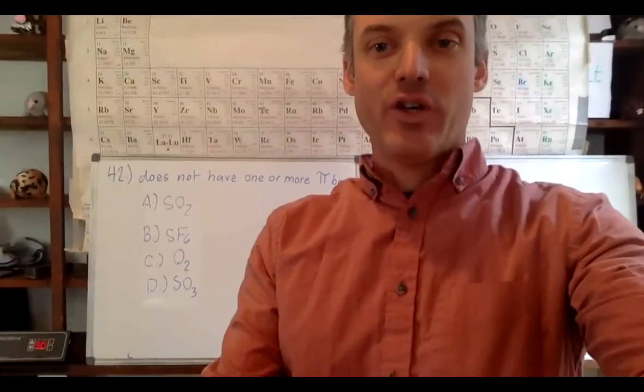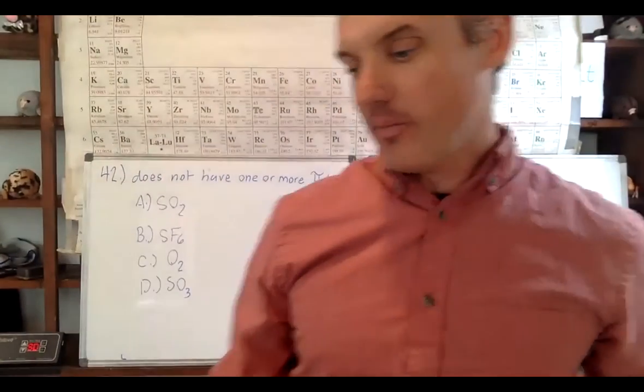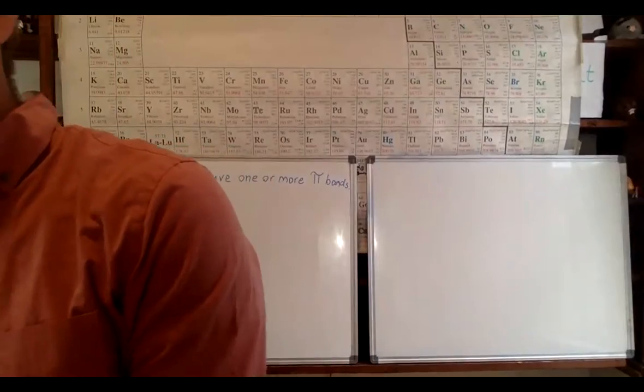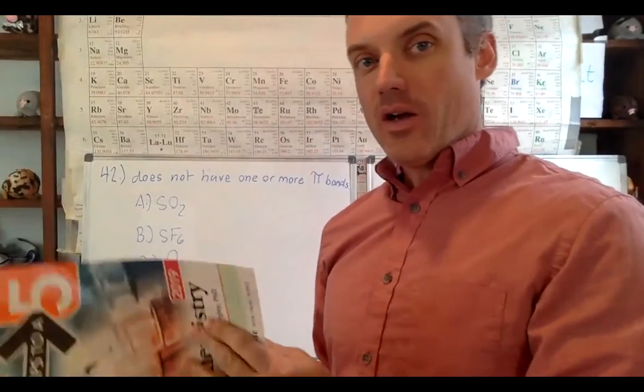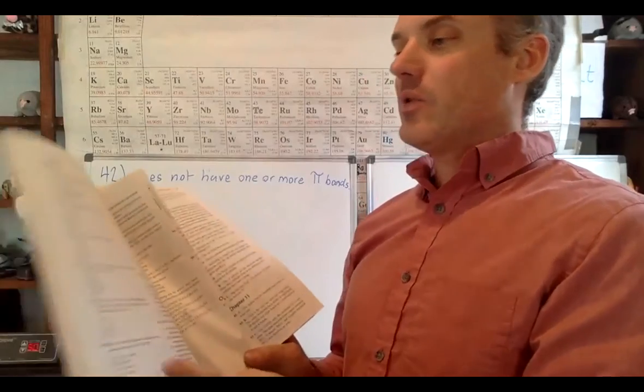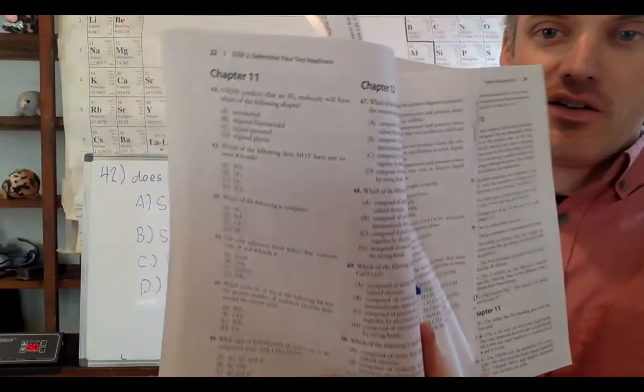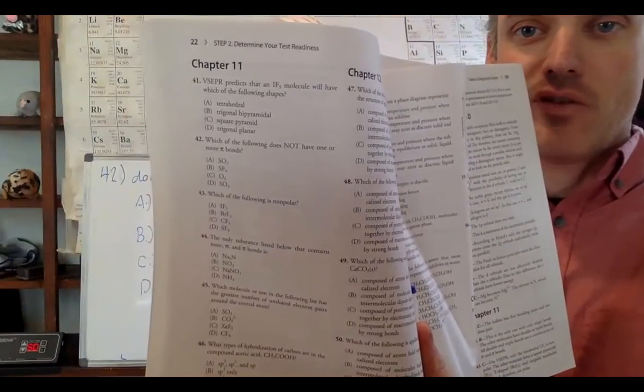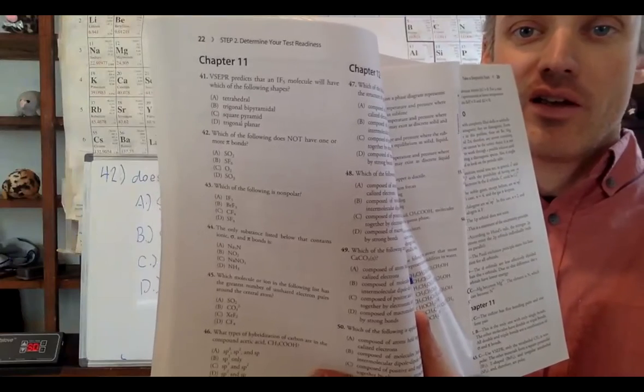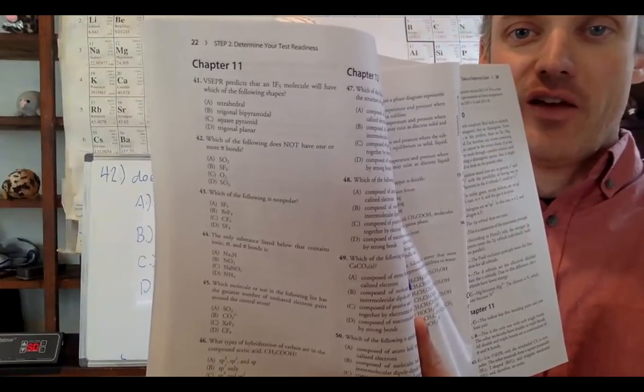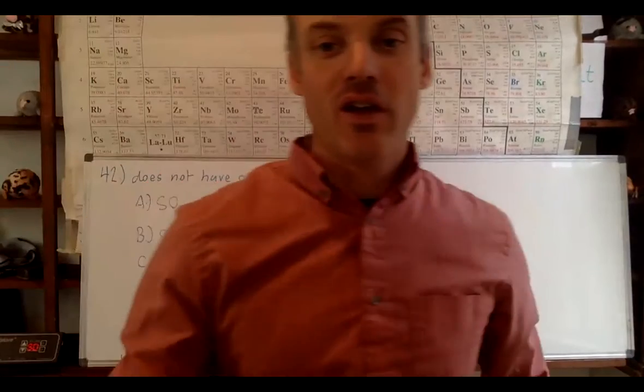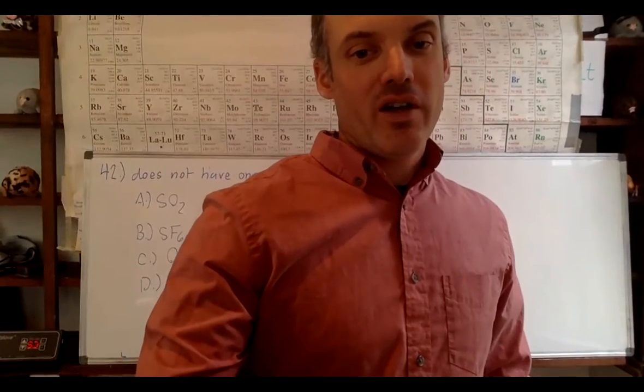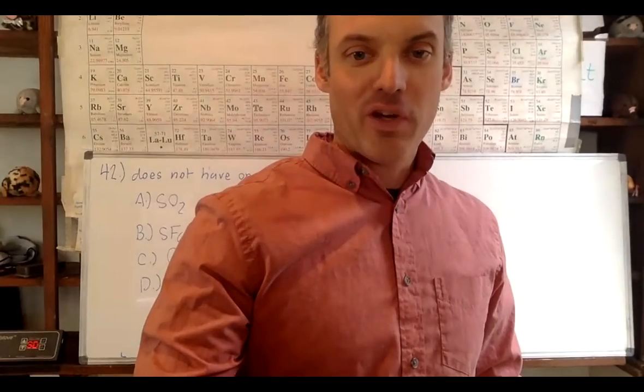Hello, alright quick video to explain a problem from AP chem from the five steps book, the diagnostic exam. Number 42, which is right here, is looking for which of the following does not have one or more pi bonds. So what's the difference between a pi bond, what is a pi bond, what does that even mean?